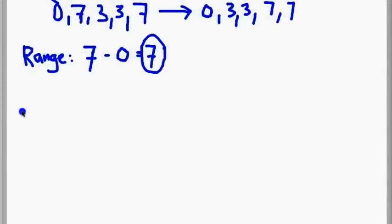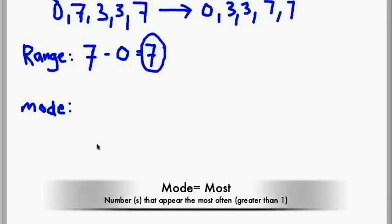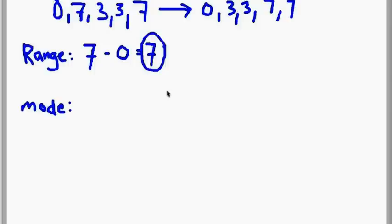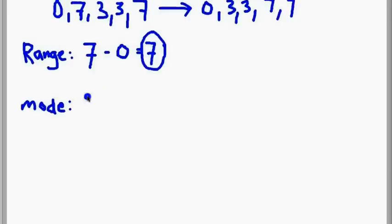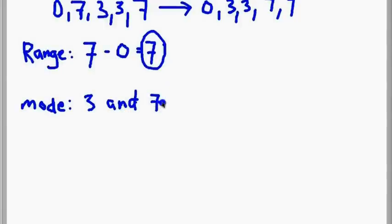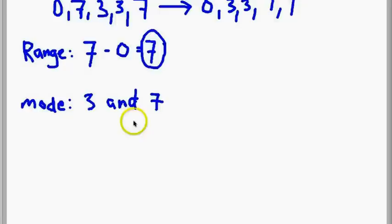Next, let's find the mode. Mode is just the number that appeared the most — mode equals most. Looking at the numbers, both 3 and 7 each appear twice, so there are two modes: 3 and 7. They both appear twice. If, for example, the number 3 appeared three times, then the mode would only be 3.